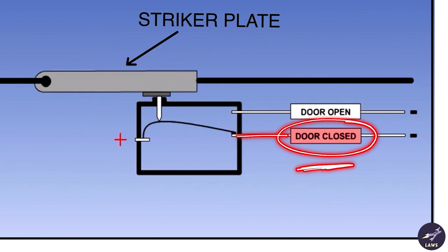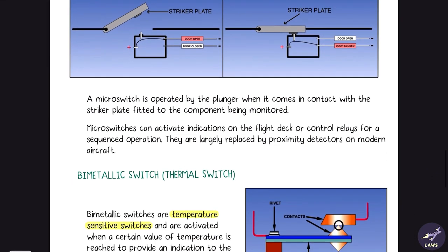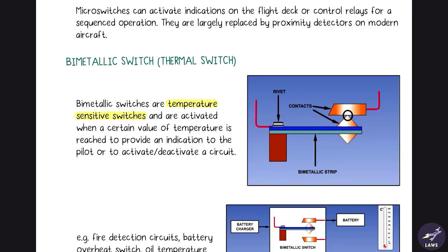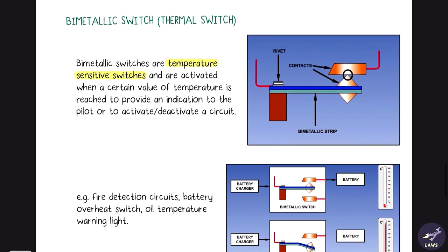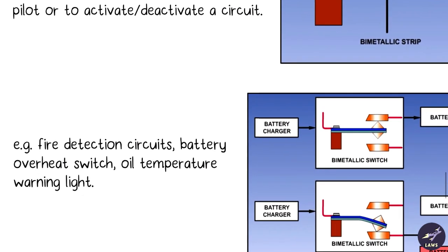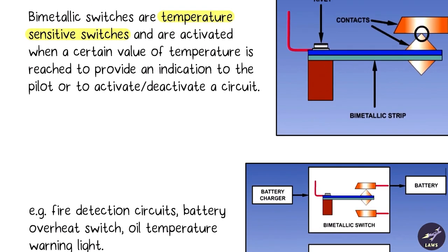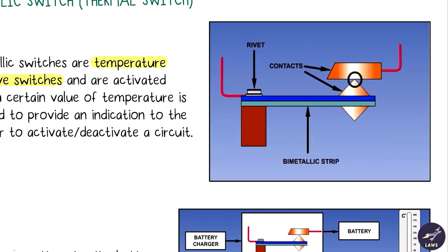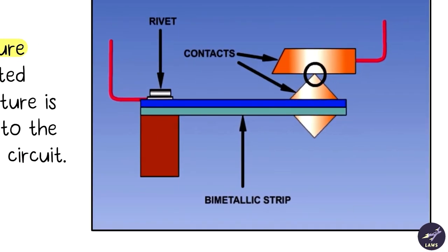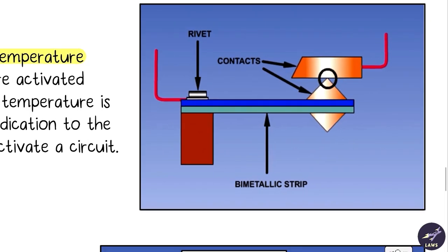Next is a bimetallic switch, also known as a thermal switch. These are temperature sensitive switches used in fire detection circuits, battery overheat switch, and oil temperature warning light. Basically how it works is there is a bimetallic strip. When you heat this strip, the metals expand at different rates - one metal will expand more, the other will expand less. Due to this, the bimetallic strip will move down.